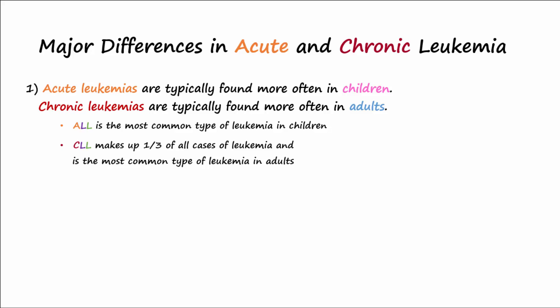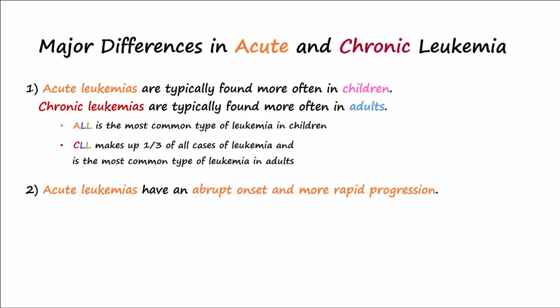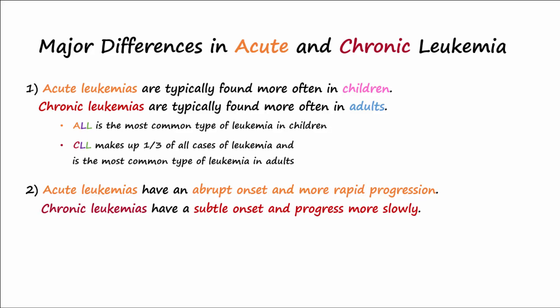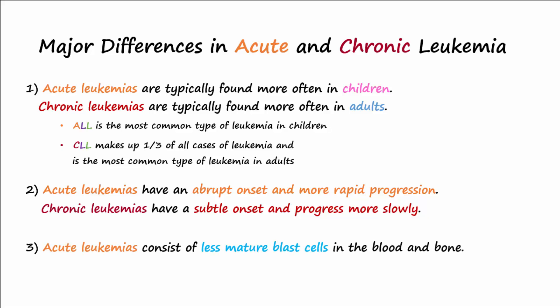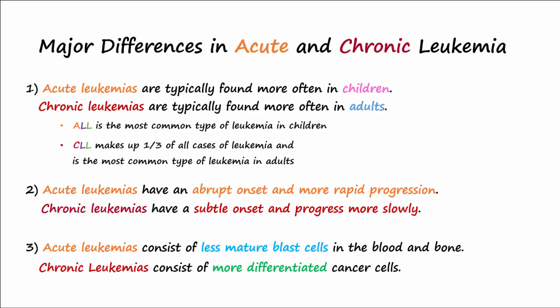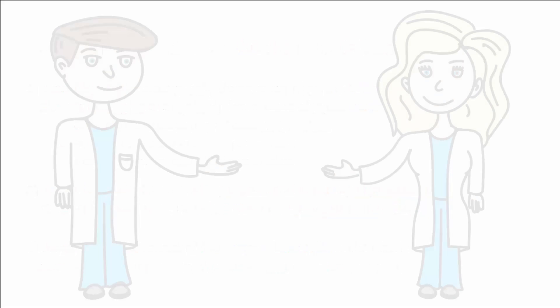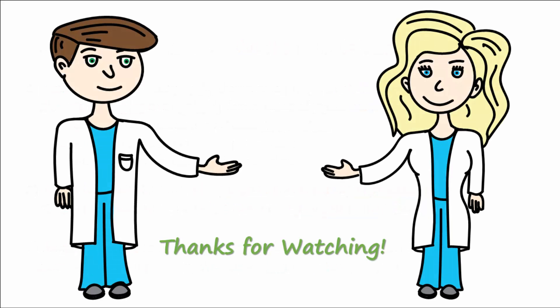Second, acute leukemias have an abrupt onset of symptoms compared to chronic leukemias, which progress more slowly with a more subtle onset. Third, acute leukemias involve less mature blast cells, while chronic leukemias involve more mature versions of developing cells.